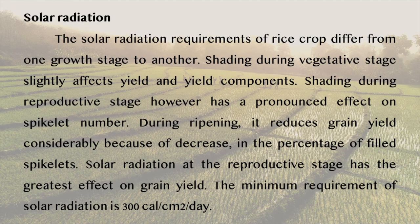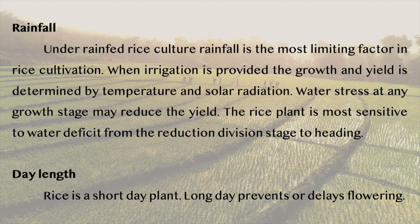The solar radiation requirements of rice crop differ from one growth stage to another. Shading during the vegetative stage affects yield and yield components. Shading during the reproductive stage has a pronounced effect on spikelet number. During ripening, it reduces grain yield considerably because of the decrease in the percentage of filled spikelets. Solar radiation at the reproductive stage has the greatest effect on grain yield. Under rain-fed rice culture, rainfall is the most limiting factor. When irrigation is provided, growth and yield are determined by temperature and solar radiation. Water stress at any growth stage may reduce the yield. The rice plant is more sensitive to water deficit from the reduction division stage to heading.